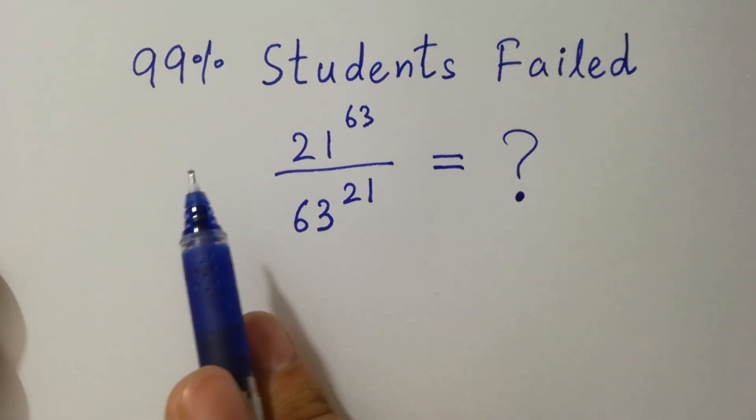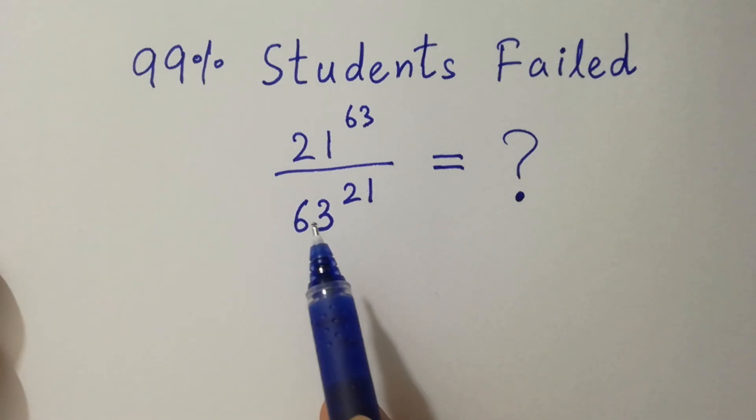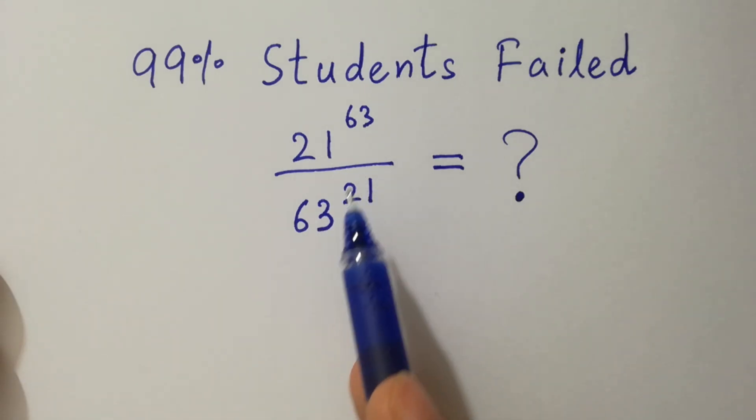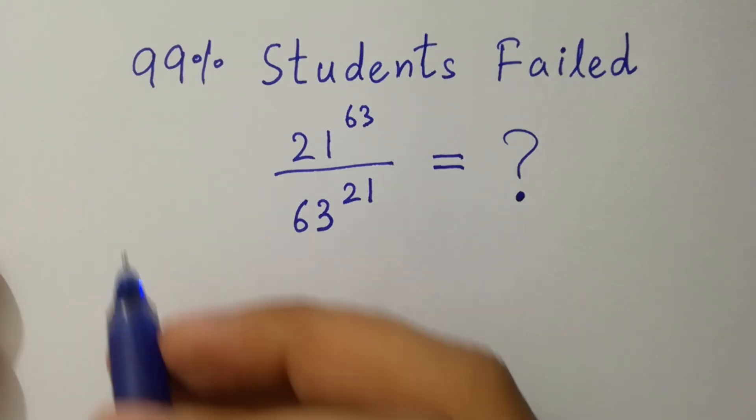Hello friends, 99% students failed. 21 to the power 63 over 63 to the power 21 equal to what? Let's have a solution.